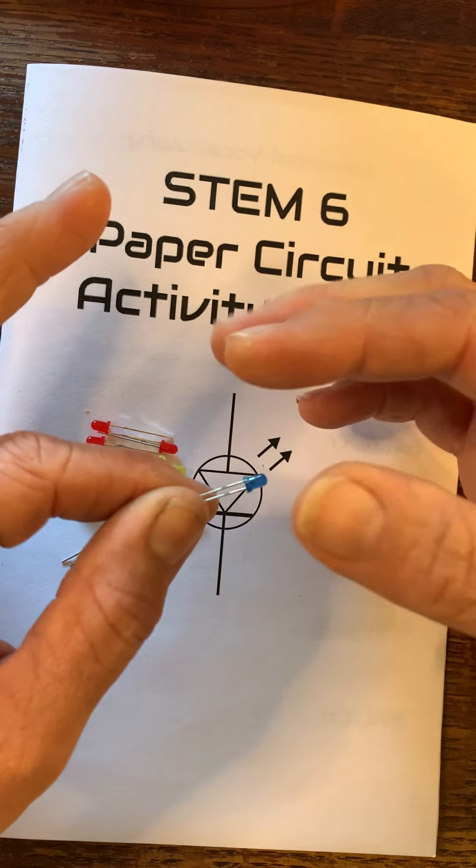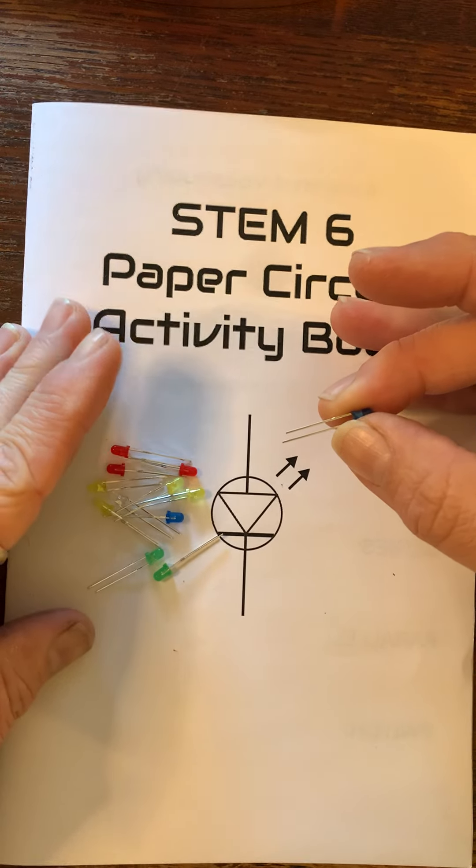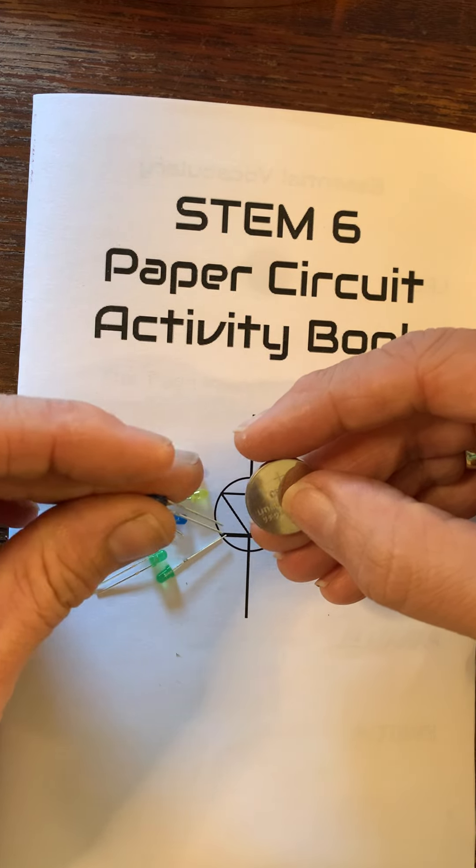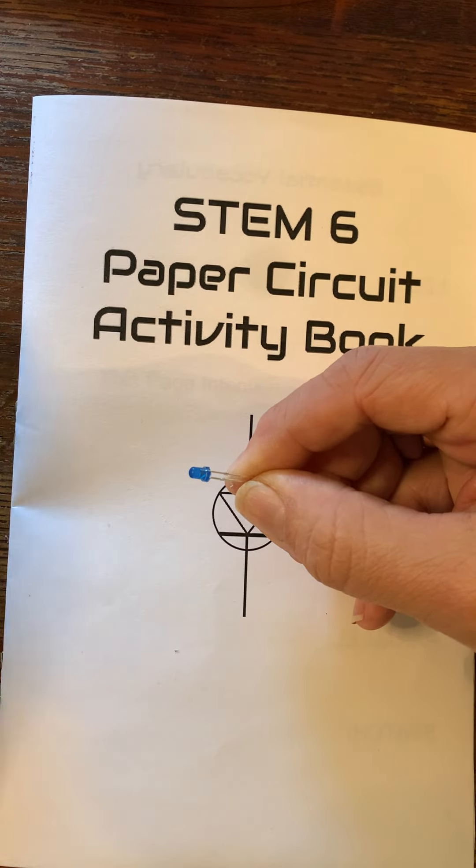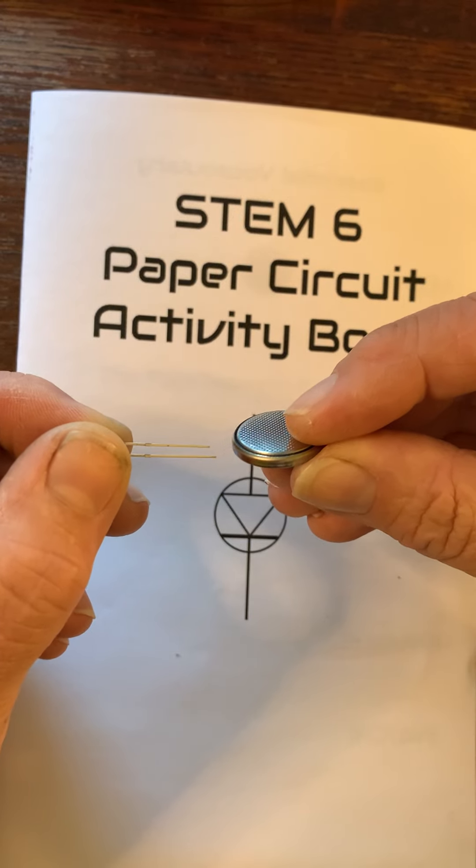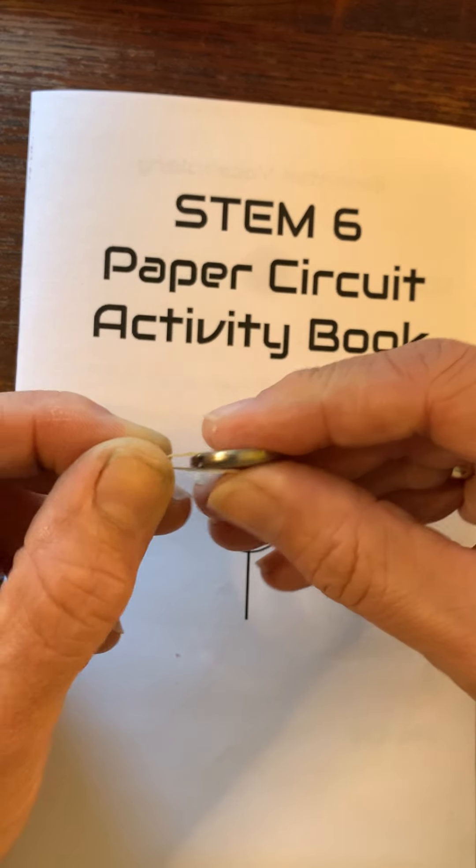Now the first thing I'm going to want you to do is make the simplest circuit of all. So take your battery and take an LED light. Now insert the battery into the LED. Just pick one way. See what happens.